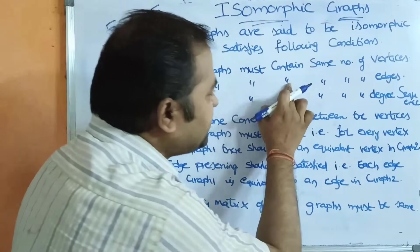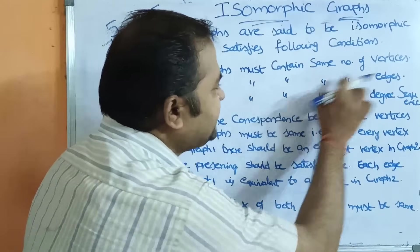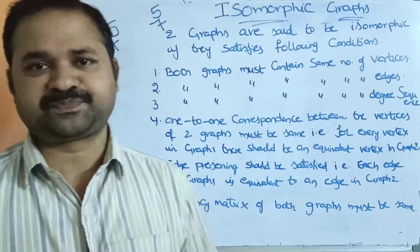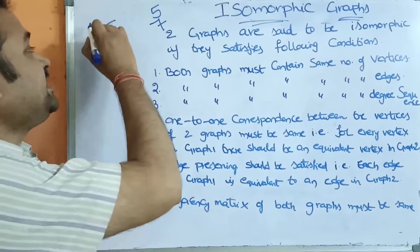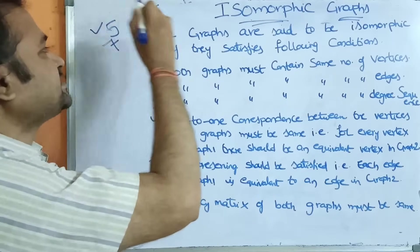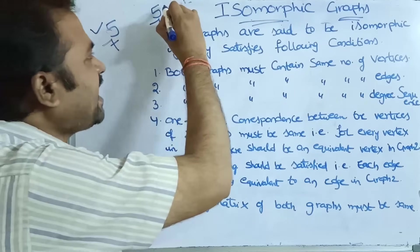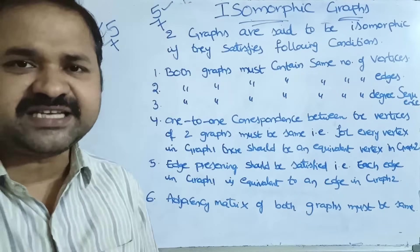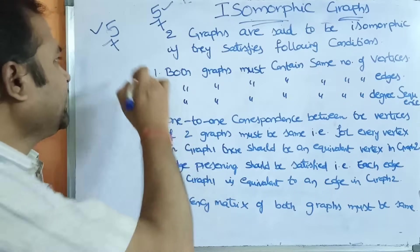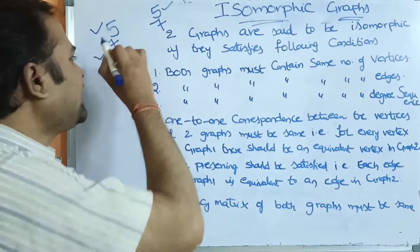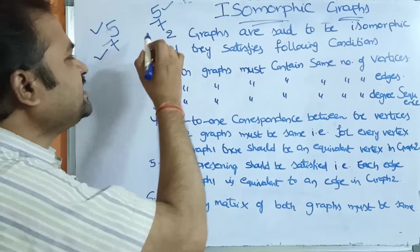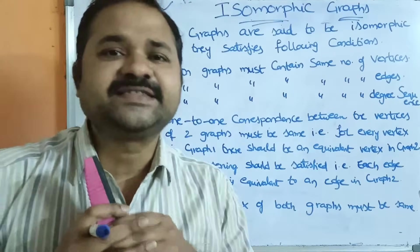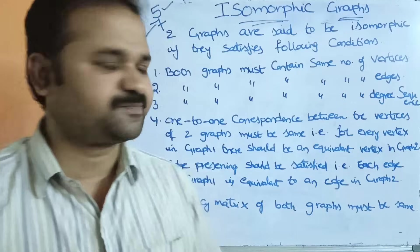The second condition is both graphs must contain the same number of edges. If graph one contains five edges then graph two should also contain five edges. If graph one contains seven edges then graph two should also contain seven edges.